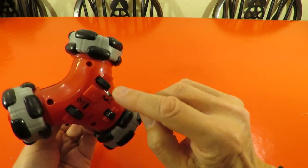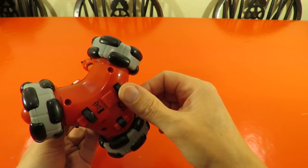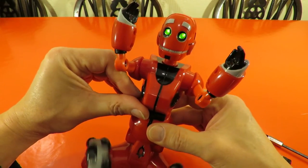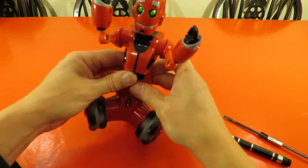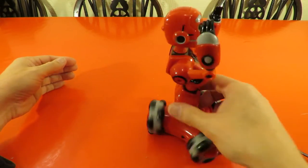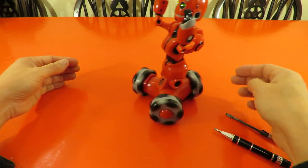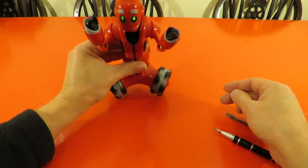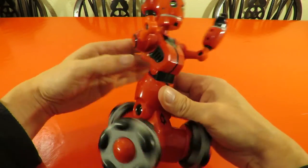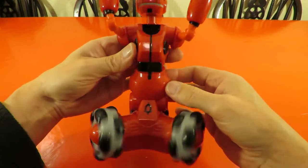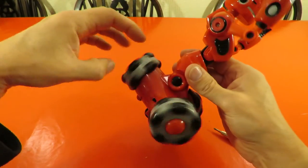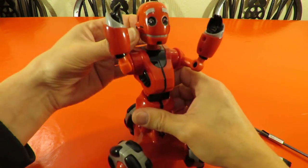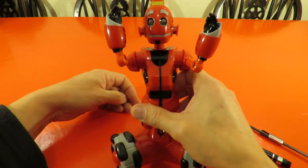These spin round but the actual drive is these two wheels underneath. Oh, and his eyes light up. I thought it was going to do some sort of object avoidance but it doesn't.